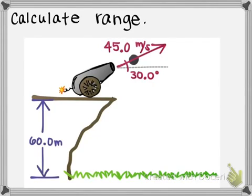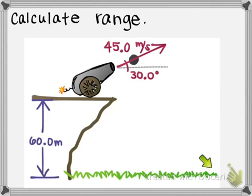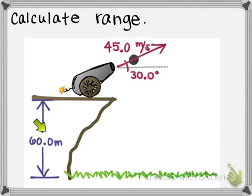We're going to do a little projectile motion problem where you have a cannon that's on top of a cliff. It's going to shoot a cannonball at an angle, it's going to go up and come down and land somewhere on the ground, and what we want to know is how far away from the base of the cannon does this cannonball land — the range of the cannonball. You're given the height of the cliff and the initial velocity, which includes its speed and angle from the horizontal.